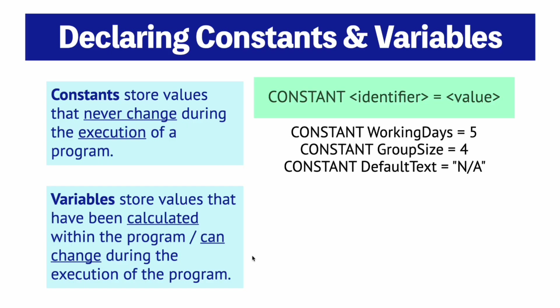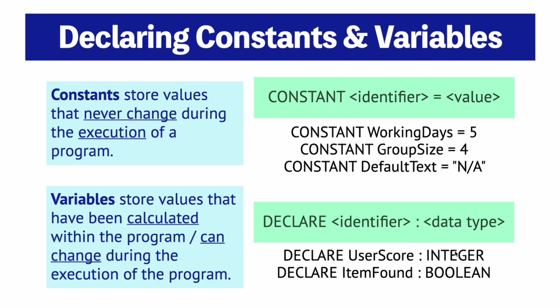On the other hand, variables store values that have been calculated within the program and that can change during execution. You declare a variable like this with the name of the variable and the data type that it stores. So here are some examples.